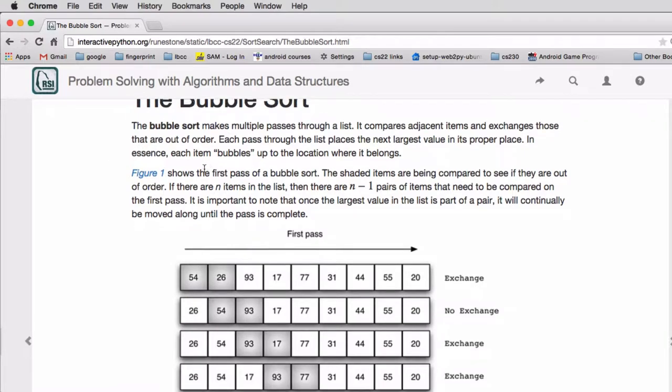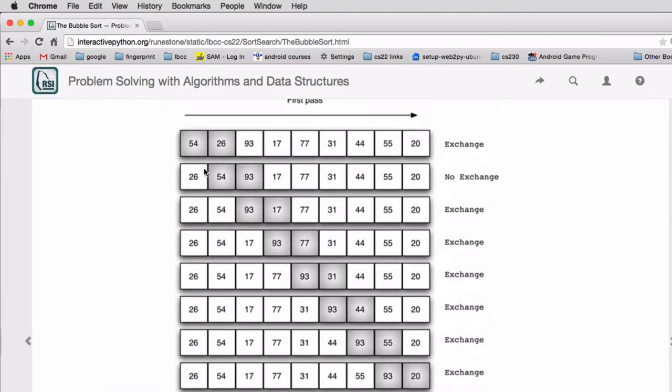So here's an example of one pass. You write this as a loop inside of a loop. This is just the example of the first loop.